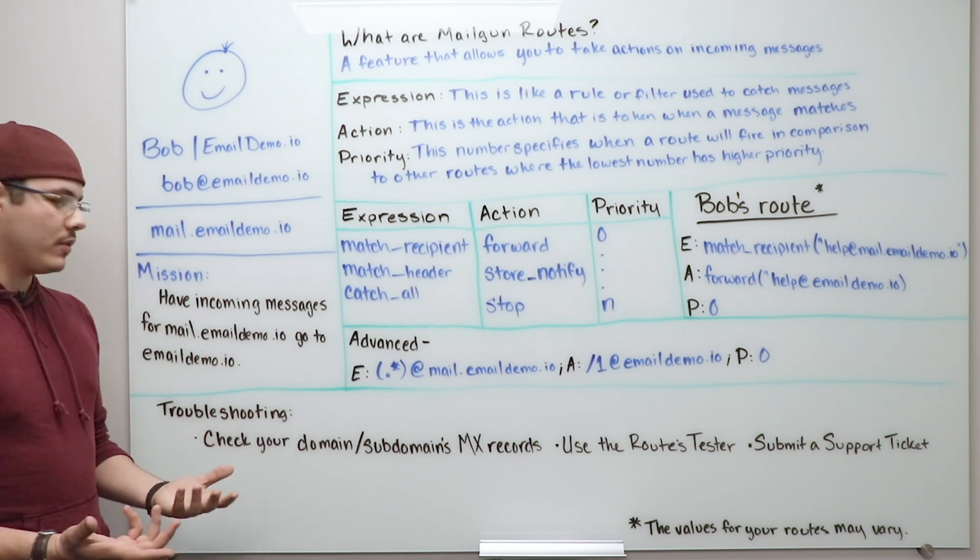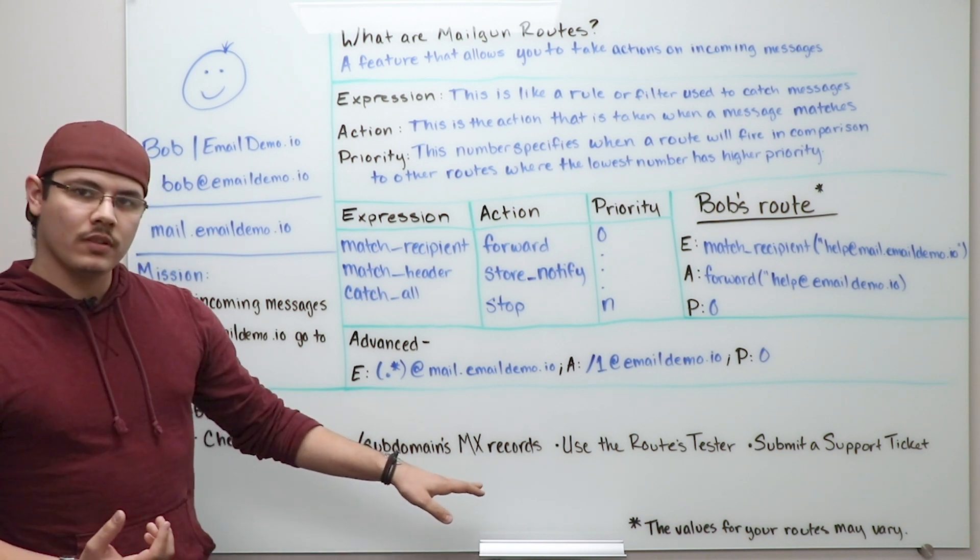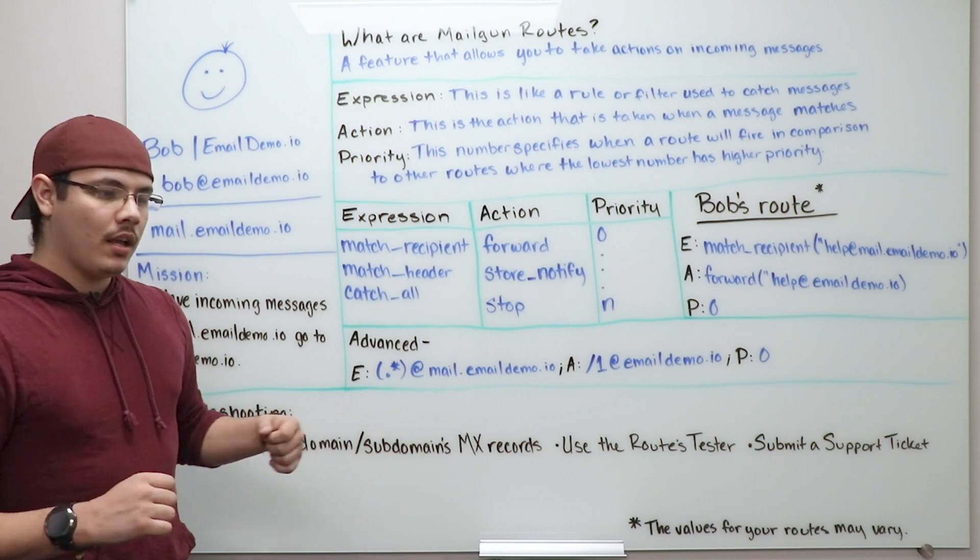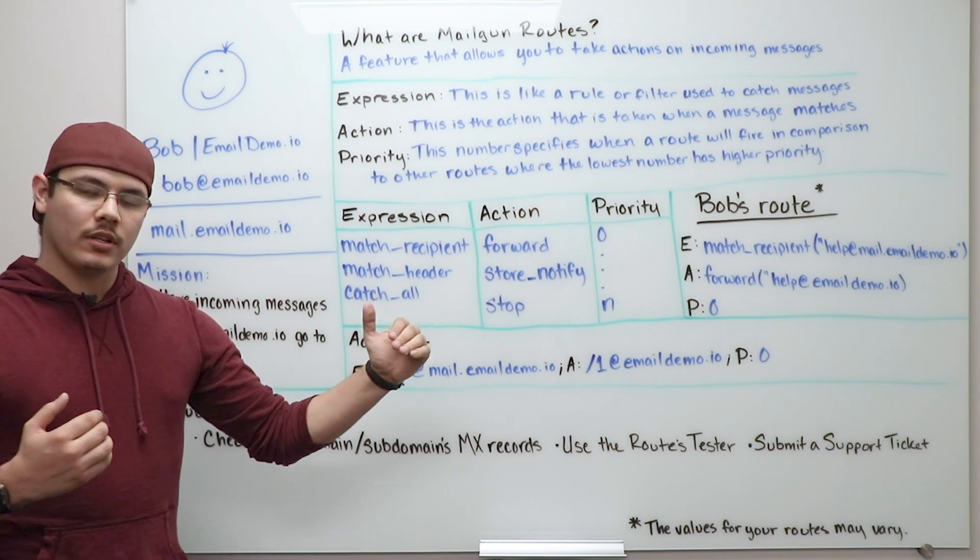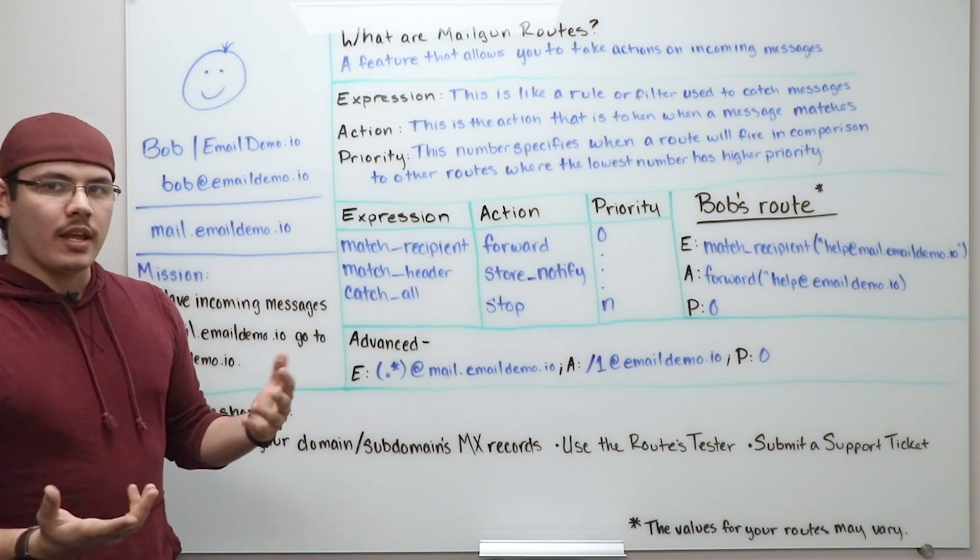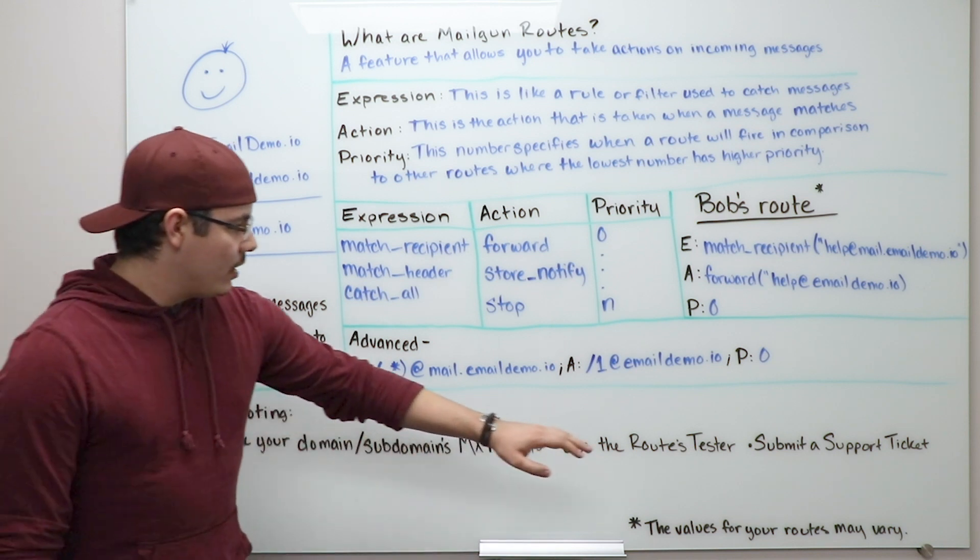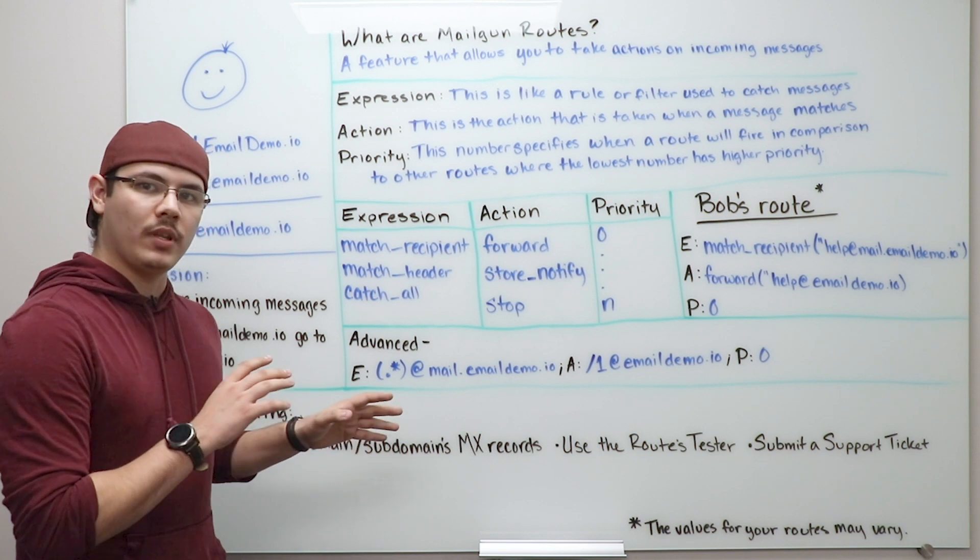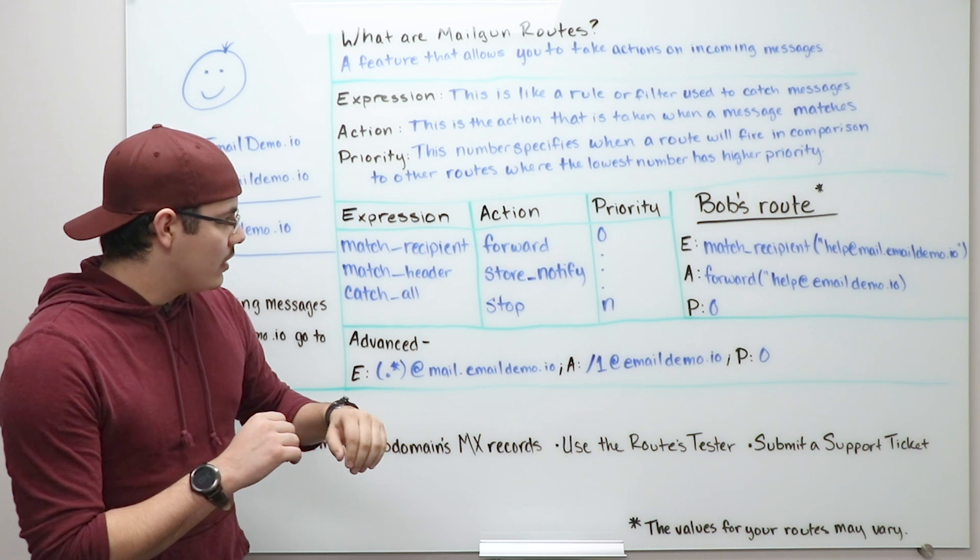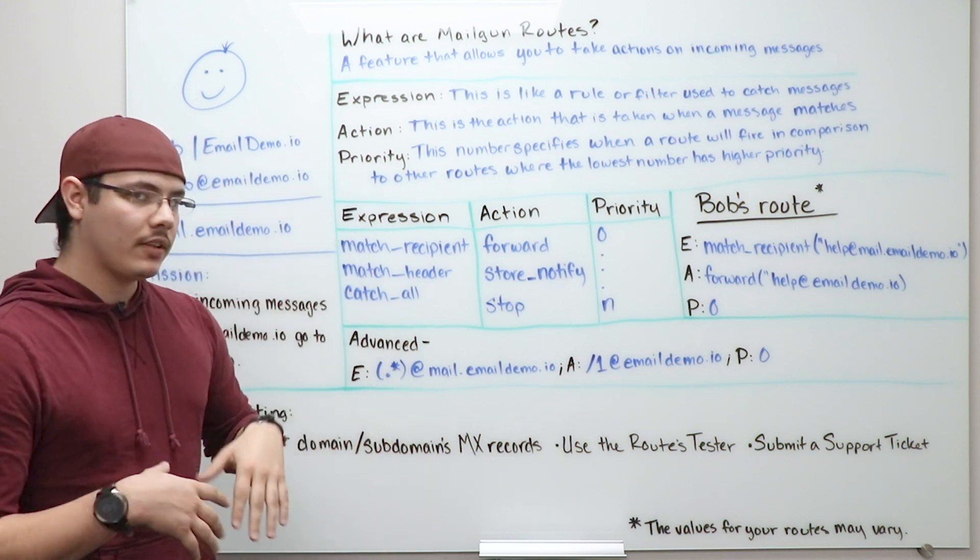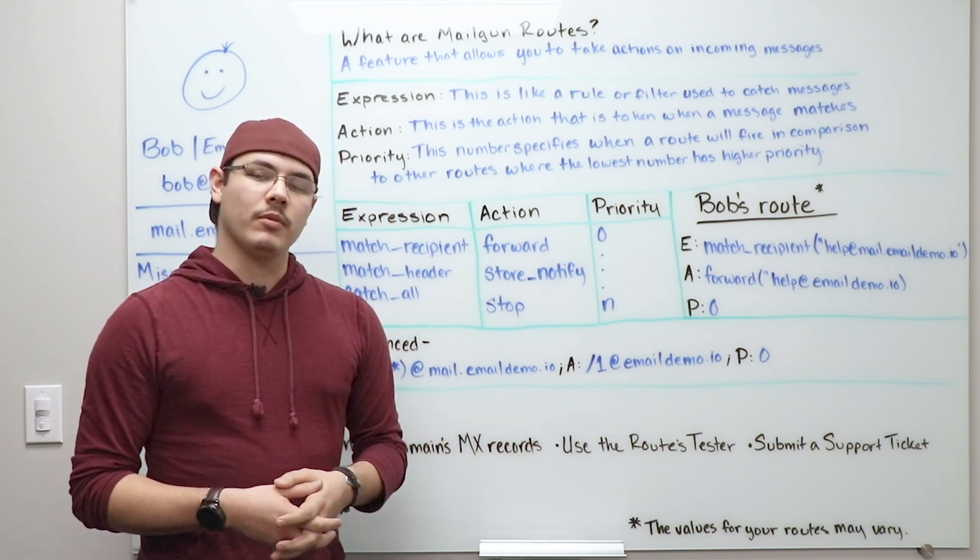Now if you need help troubleshooting your routes, you would first want to make sure your domain and subdomains MX records are pointing to Mailgun and that they're the only MX records. If you have multiple MX records like Gmail MX records or G Suite MX records and Mailguns, you might have some conflicts. Now the other thing, if those are all set up correctly, use the routes tester. Make sure whatever email you're trying to listen to and have a route take place on is going to actually fire that route. And lastly, if that doesn't work, submit a support ticket to Mailgun and one of our support team members will be able to help you out.